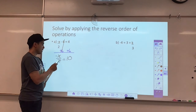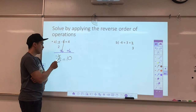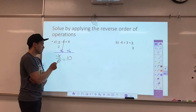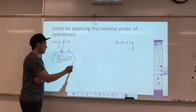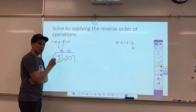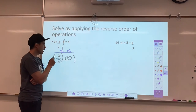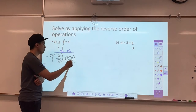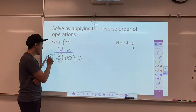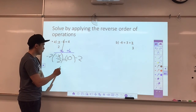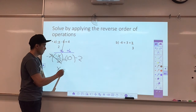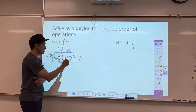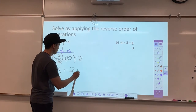x is being divided by 2, so I would multiply by 2 on both sides. But since I know I want a positive variable in the end, I'm actually going to multiply by negative 2 so that a negative times a negative gives me a positive x. The twos cancel, and 10 times negative 2 is negative 20.